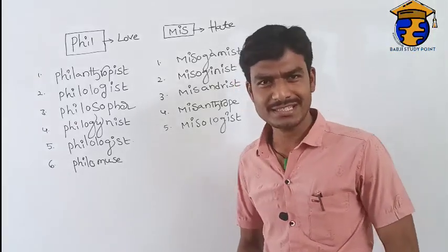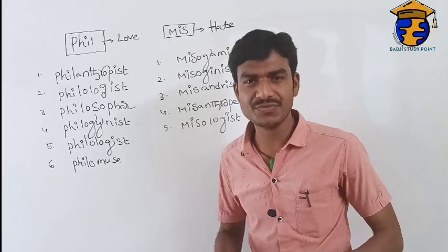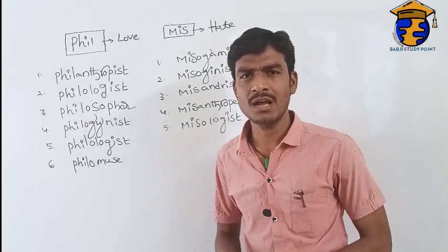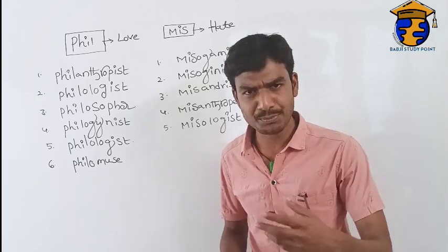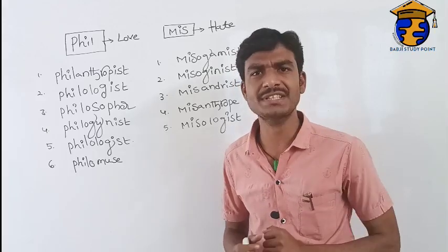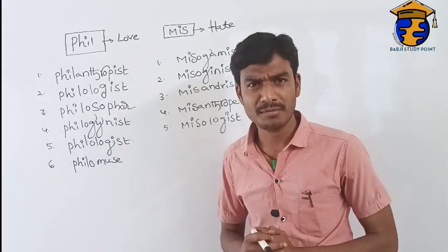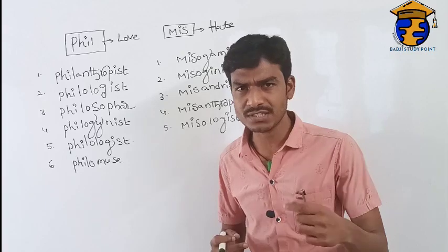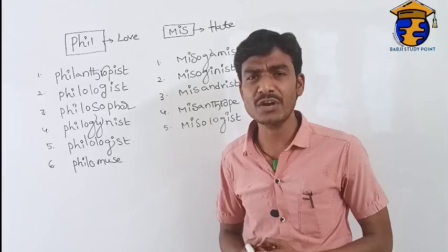Hi everyone. This is Santos Faculty in English. Today we are going to discuss one-word substitutes. We have already learned some one-word substitutes in previous classes. Today in this class I have taken two prefixes: the first one is 'phil' and the second one is 'mis.' The prefix 'phil' means love, and the prefix 'mis' means hate.